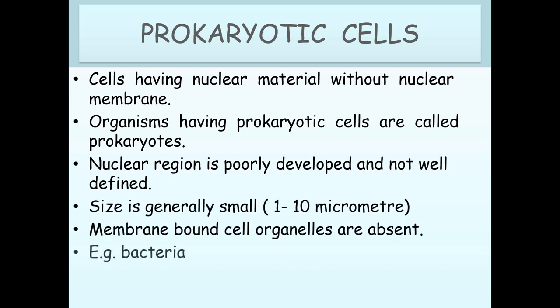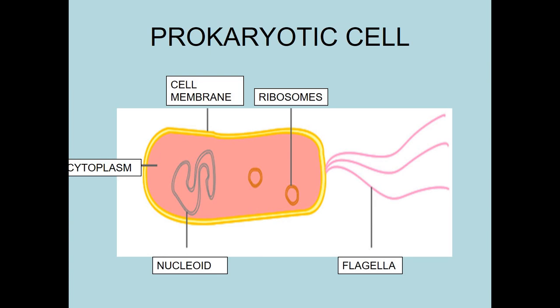Prokaryotic cells. These are cells having nuclear material without a nuclear membrane. Organisms having prokaryotic cells are called prokaryotes. The nuclear region is poorly developed and not well defined. Size is generally small, and membrane-bound cell organelles are absent. For example, bacteria. Here you can see a simple diagram of a prokaryotic cell.